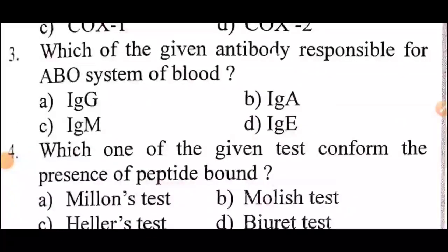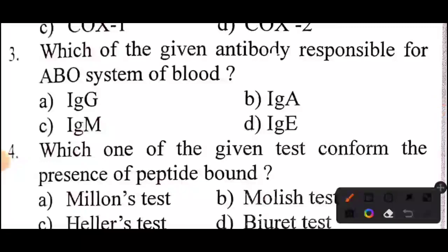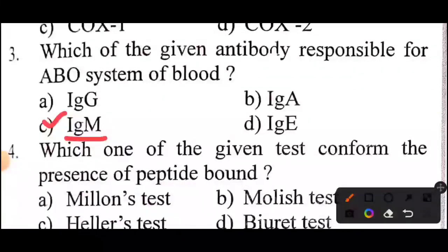Third question: Which of the given antibodies is responsible for the ABO system of blood? Answer: IgM.